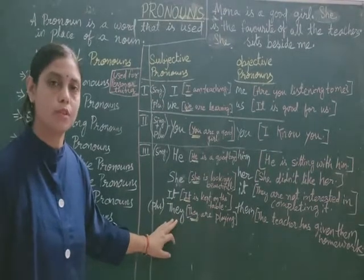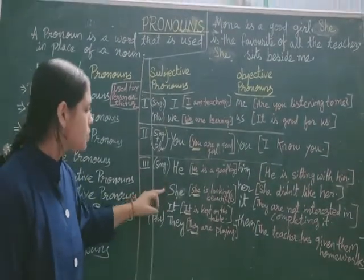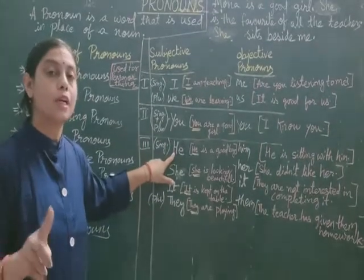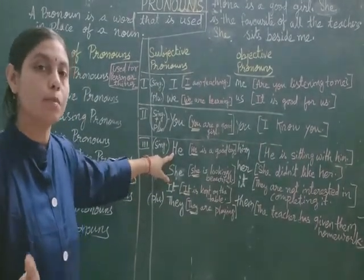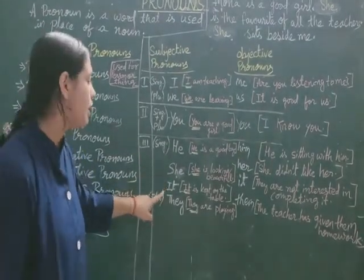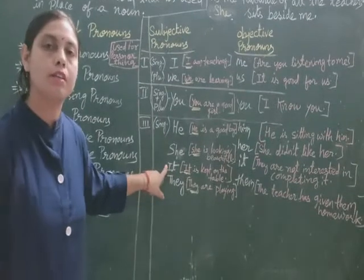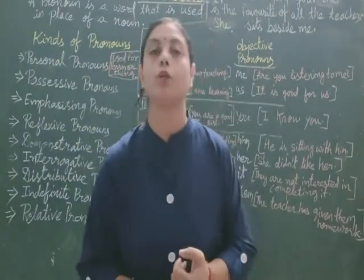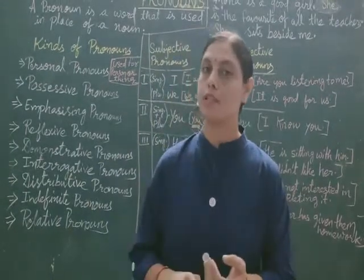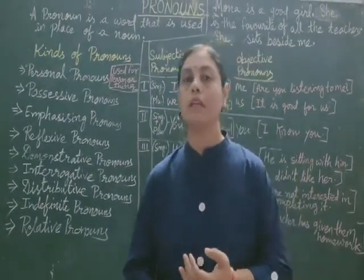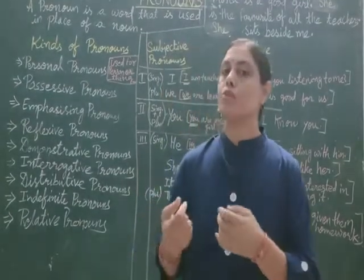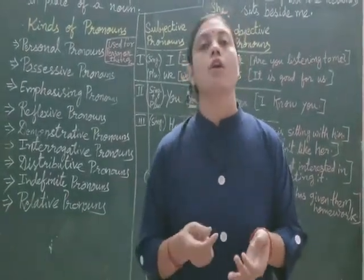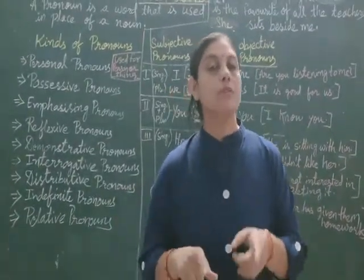He, she, and it are singular pronouns; they is plural. He is used for masculine gender or male. She is used for feminine gender or female. It is used for non-living things, but sometimes also for living things when we don't know whether it is male or female. Jab hum ko koi idea nai hota hai ki woh male ya female ho, toh hum 'it' use karte hai. We also use 'it' for animals, for a child or baby, and for time, distance, etc.